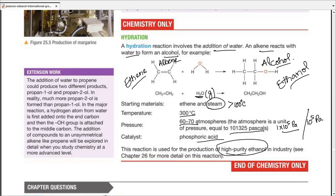But if we're going to add water to propene, it would give us propan-1-ol and propan-2-ol. In reality, propan-2-ol is formed much more than propan-1-ol. In the major reaction, hydrogen atom from water is first added to the end carbon, then the OH group is attached to the middle carbon. The addition of compounds to unsymmetrical alkenes like propene will be explored at an A-level. So this much information will not be tested at this paper. You just need to understand that propene would yield two products instead of one. This only yields one product. Starting from propene, there would be two products, propan-1-ol and propan-2-ol. As there are only two carbon atoms, so ethanol cannot be called as ethan-1-ol or ethan-2-ol. Actually, every ethanol molecule is ethan-1-ol itself.